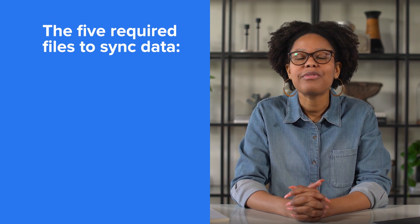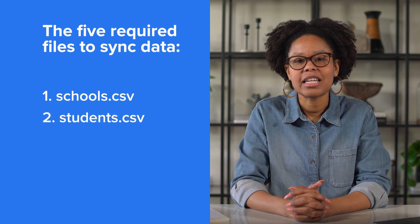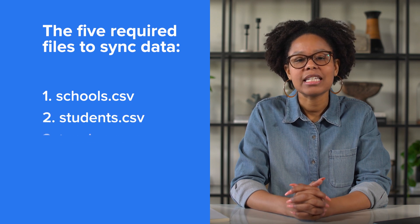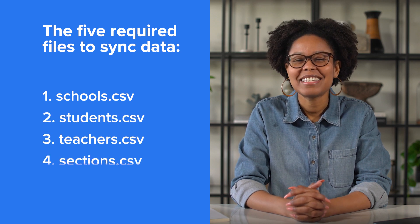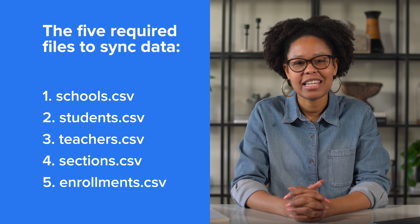When you set up an SFTP or manual sync, you need to set up five required files to get your data organized and sent over to Clever and apps you connect to Clever. The five required files are schools.csv, students.csv, teachers.csv, sections.csv, and enrollments.csv.